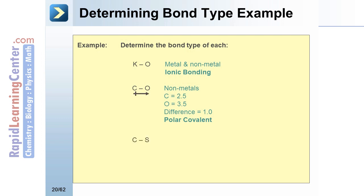Carbon and sulfur. Two nonmetals. Carbon is 2.5 for electronegativity. Sulfur is also 2.5. There's no difference. This will be a covalent, or a nonpolar covalent, bond.